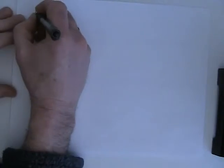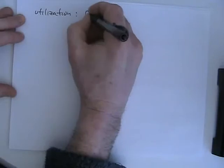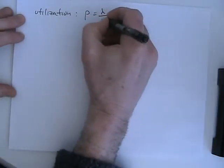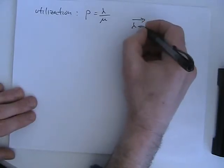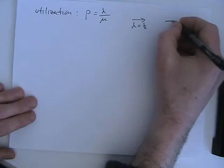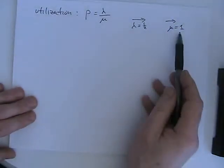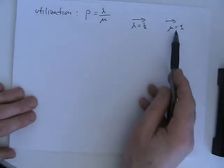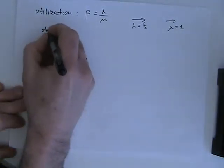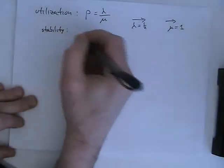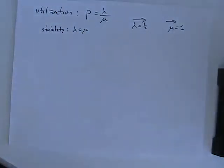A key parameter is the utilization rho, which equals lambda over mu. If arrivals come in at rate 1/2 and we can service at rate 1, the system is 50% utilized — lambda over mu equals 1/2.